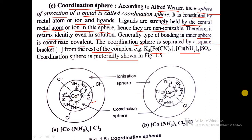In another case, the coordination sphere shows cobalt surrounded by 4 ammonia molecules and 2 chlorine ligands, because the coordination number of cobalt is 6.